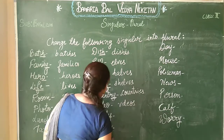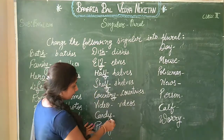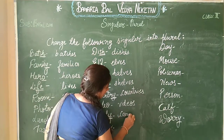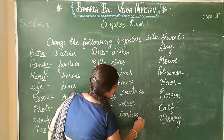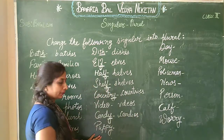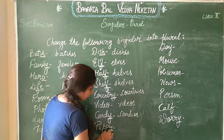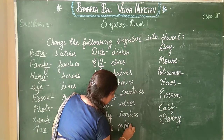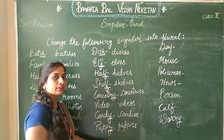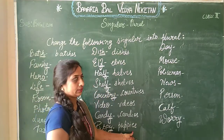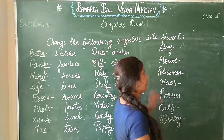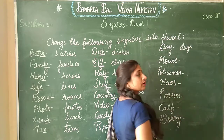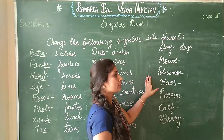Next word is 'video' — 'videos'. Next: 'candy'. At the end there is Y, so it becomes 'candies'. Next: 'day' becomes 'days'. Day means one day and days means many days.